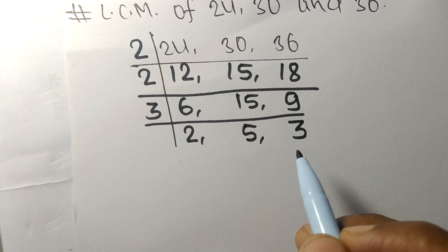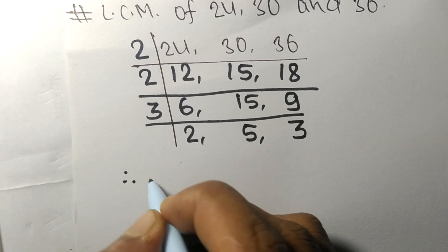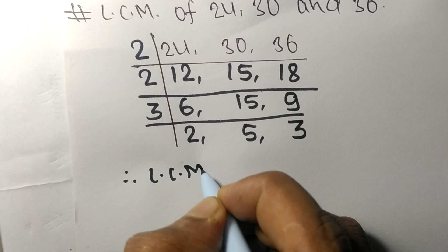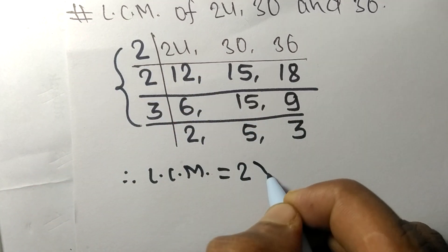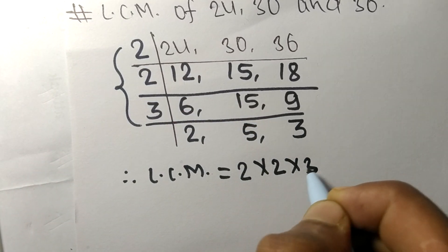And from this side it is 2 times 5 times 3. By multiplying all these numbers, we get 360.